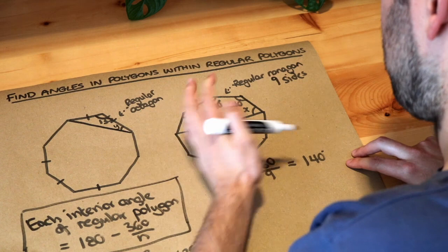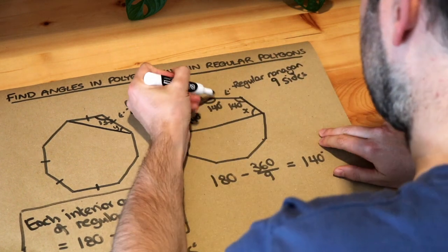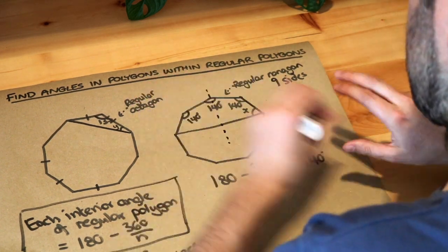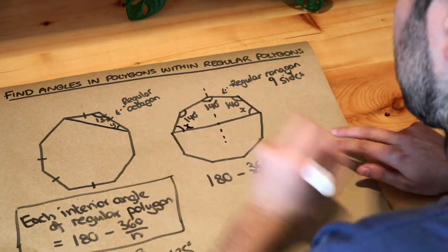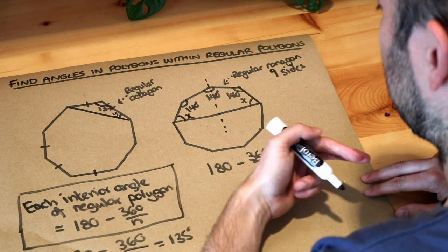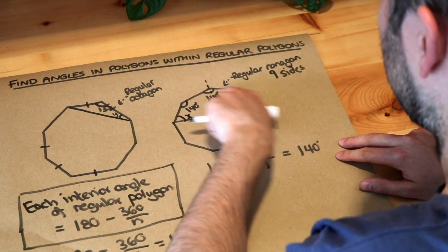However, we do know by symmetry—look, there's a line of symmetry here—that angle there, that x there, is going to be the same as that angle there, so we can call that x. And this goes back to a previous video we saw earlier where we have angles in a polygon.